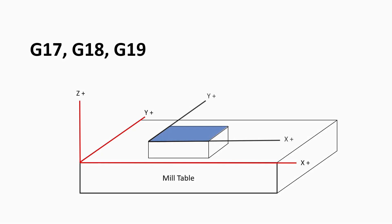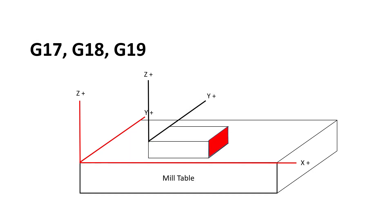G17 is the XY plane. When this word is used, it lets the machine know that all cutting action after G17 is called up will take place on the XY plane. When G18 is used, the XZ plane is activated, and when G19 is used, the YZ plane is activated.